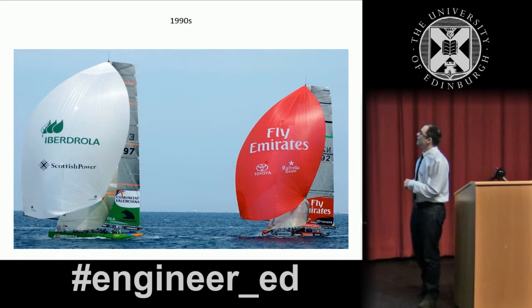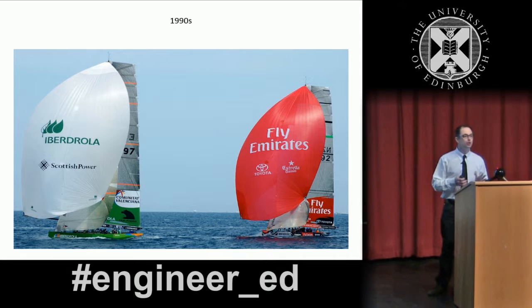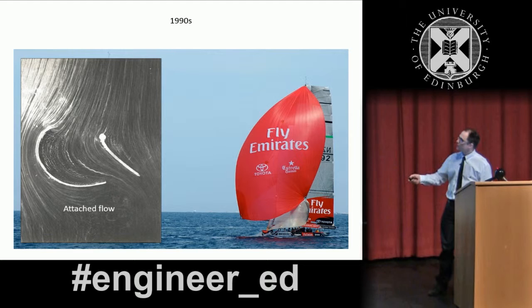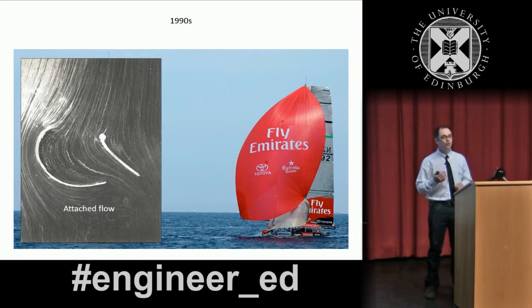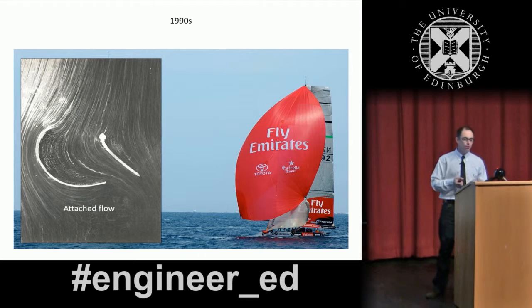About ten years later, thanks to a guy called Tom Schnackenberg from New Zealand, he invented this amazing shape which is not called Spinnaker anymore. After many years, we now have Gennakers. Now the Gennakers have actually the capability to retain the attached flow behind them. And that is a major step in terms of the efficiency of the sails. We basically overcome the limitation of the Reynolds number and we manage to have attached flow around a sail which is smaller and goes slower than an airplane.